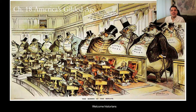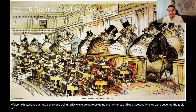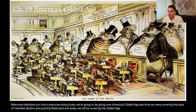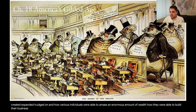Welcome historians! Today we're going to be going over America's Gilded Age. Last time we were covering the topic of manifest destiny and pushing westward. Today we will be covering the Gilded Age — how the American industrial might and system was created, expanded, and how various individuals were able to amass an enormous amount of wealth and build their businesses to such an extraordinary degree.